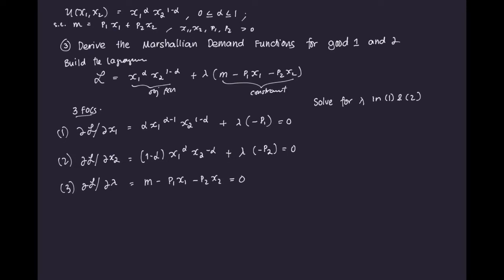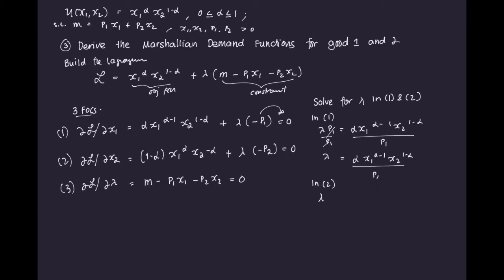In equation 1, transposing to the other side, we get lambda·p1 = α·x1^(α−1)·x2^(1−α). Dividing both sides by p1, we get lambda = α·x1^(α−1)·x2^(1−α) / p1. In equation 2, transposing, we get lambda·p2 = (1−α)·x1^α·x2^(−α). Dividing both sides by p2, we get lambda = (1−α)·x1^α·x2^(−α) / p2.